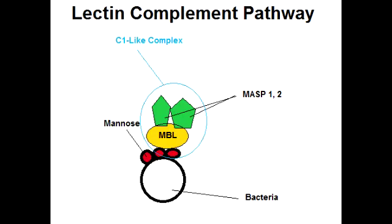Now that we're done with the discussion on the classic and the alternative pathway, let's move on to the last pathway, which is the lectin pathway. The lectin pathway is similar to the classic pathway — it just has a different starting process, but everything else is the same. So let's start talking about this starting process and eventually we will understand how it links up to the classic pathway.